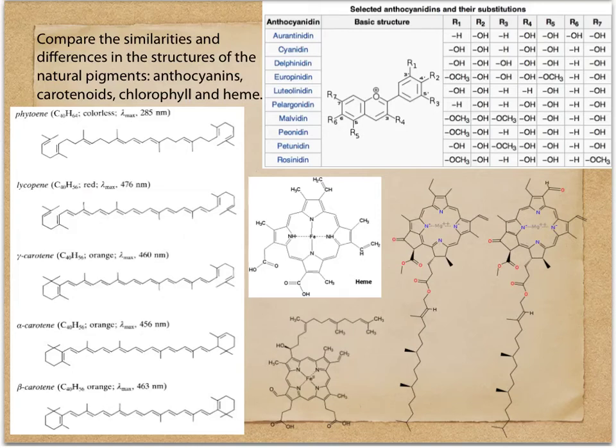Hey, so now the last bit of food chemistry here, we're looking at the similarities and differences between the structures of our pigments. We talked about pigments before, now we just want to identify what the structures are, what are the main things we should be identifying when we're looking at the structures, and how do we differentiate between them.